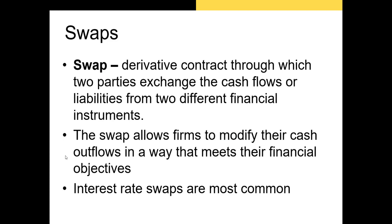Last but not least, let's talk about swaps or swap contracts. Swaps are derivative contracts that allow two parties to exchange cash flows on liabilities from two different financial instruments. There are many kinds of swaps and many reasons to use them, but the most common reason for firms is to alter their cash outflows that they have to pay to creditors. In terms of kinds of swaps, we have interest rate swaps, commodity swaps, currency swaps, and credit default swaps, among others. However, interest rate swaps are the most common.